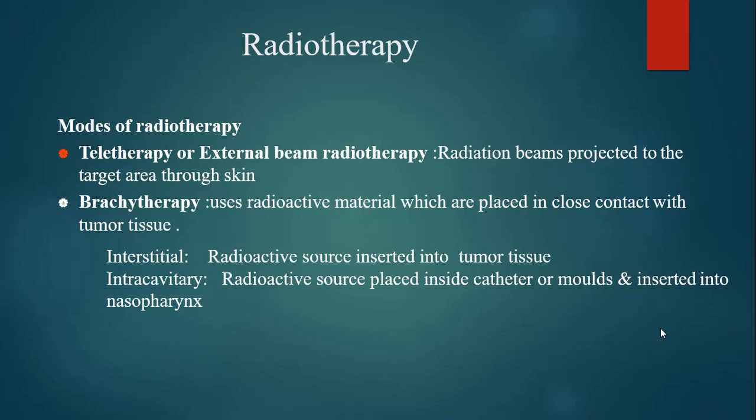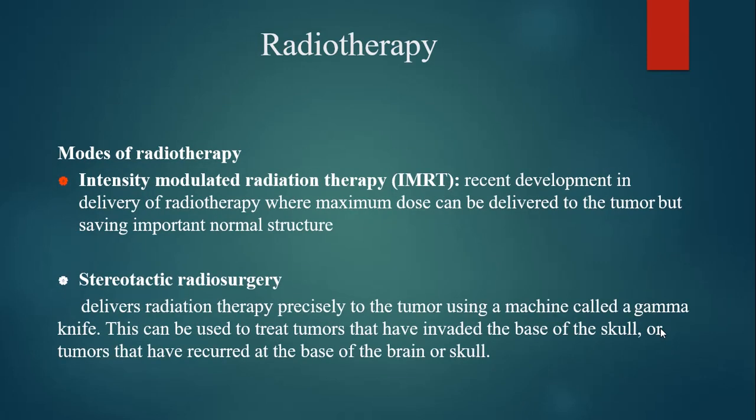The modes of radiotherapy used include teletherapy or external beam radiotherapy, where beams are projected to the target area through the skin. Brachytherapy uses radioactive material placed in close contact with tumor tissue, and is of two types: interstitial, where the radioactive source is inserted into the tumor tissue, and intracavitary, where the radioactive source is placed inside a catheter or mould and inserted into the nasopharynx. IMRT, or intensity modulated radiation therapy, is a recent development allowing maximum dose to the tumor while sparing normal structures. Stereotactic radiosurgery uses the gamma knife to precisely remove the tumor.